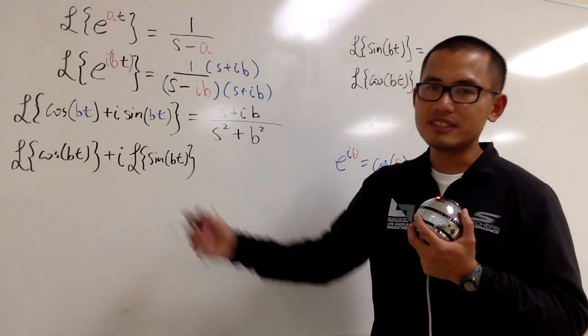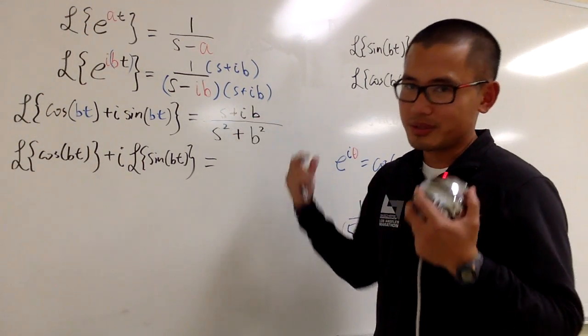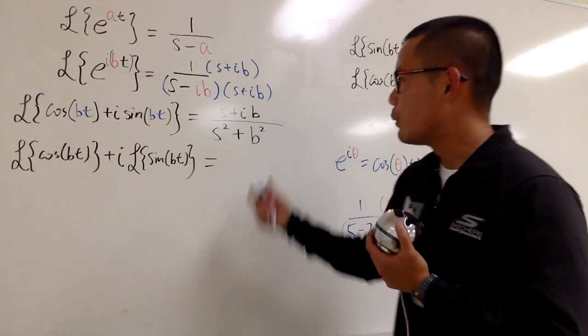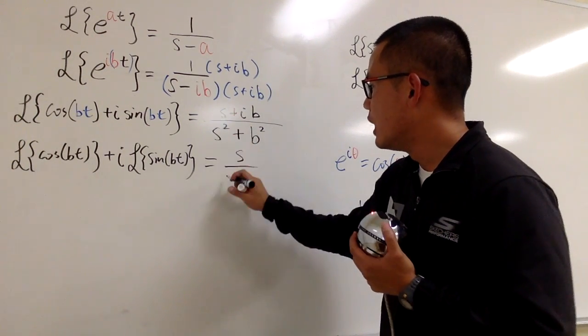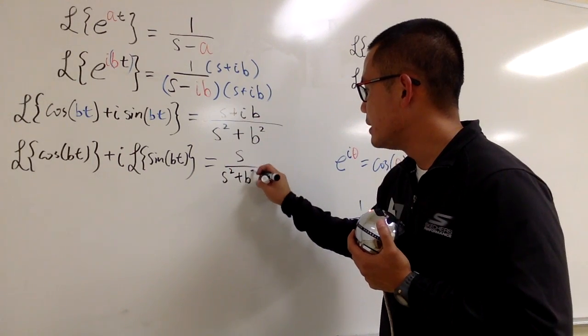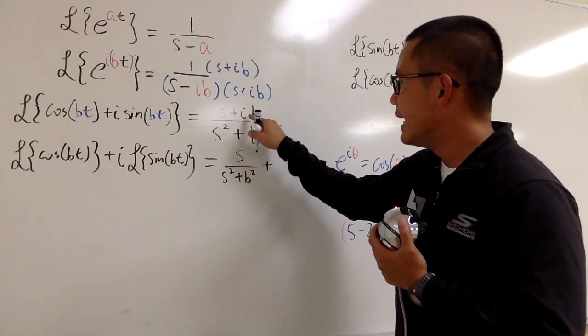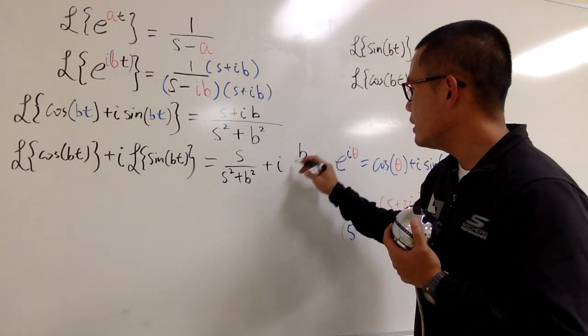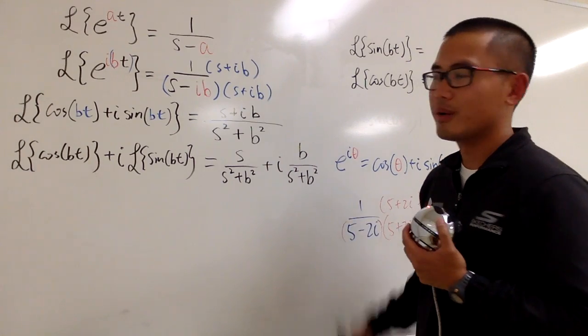That's what we have on the left-hand side. On the right-hand side, this is also technically a complex number. I will split the fraction. First one, I will write it down as s over s squared plus b squared. And next, I will put down plus, and then we put down the i first, and then we will have b over s squared plus b squared.